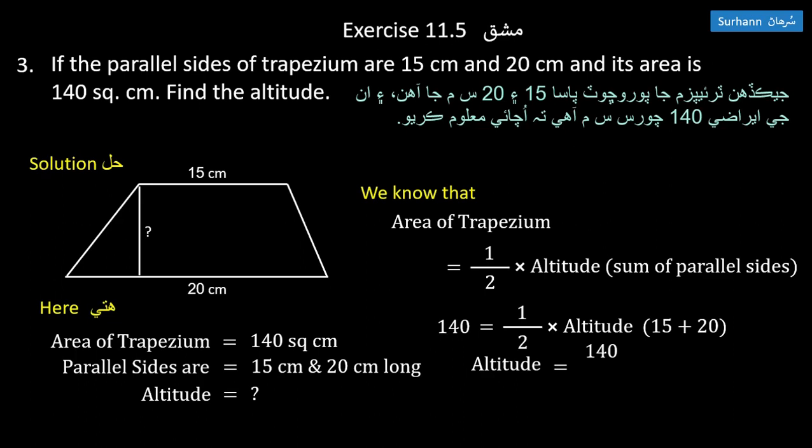Multiply both sides by 2: 280 equals altitude times 35. Divide both sides by 35: altitude equals 280 divided by 35, which equals 8 centimeters. The altitude is 8 centimeters.